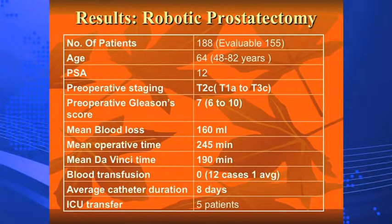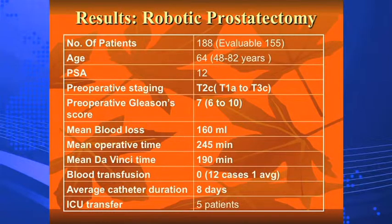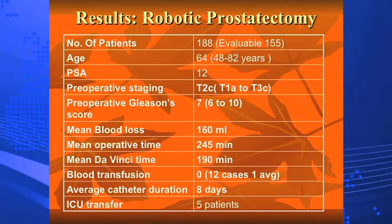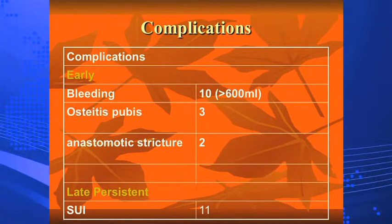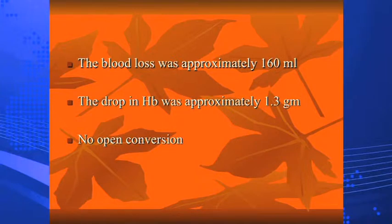Now for the robotic series: 188 cases, 155 evaluable, age range 64–82 years, median PSA 12. We are now fortunately getting patients with lower PSA. Clinical stage included T2C and some T3. Blood loss was definitively less in the robotic series compared to open — even on the learning curve, hemoglobin drop was only 1.3 grams. No blood transfusions were required. Mean operative time was acceptable. Late complications were standard. Eleven patients had initial stress incontinence.